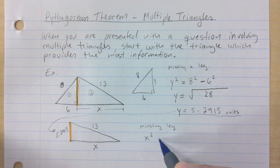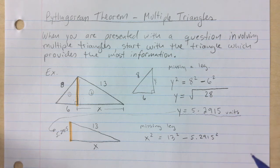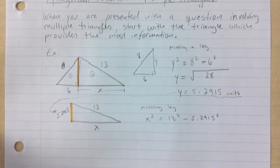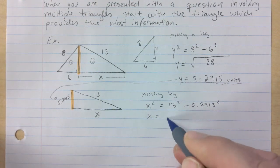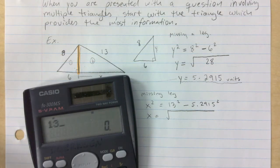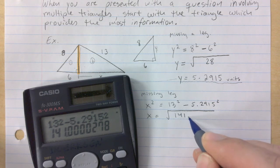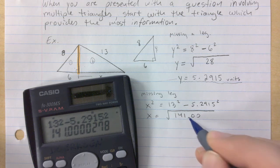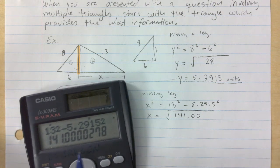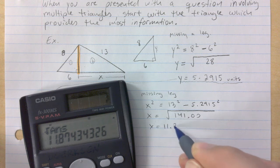This is 5.2915 and this is 13, and now it's all over again, missing a leg again. So it's going to be x squared, you take the hypotenuse and you subtract that other leg from it. X will be the square root of whatever that is. 13 squared minus 5.2915 squared, and you get 141 exactly.